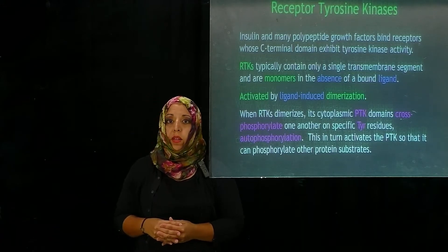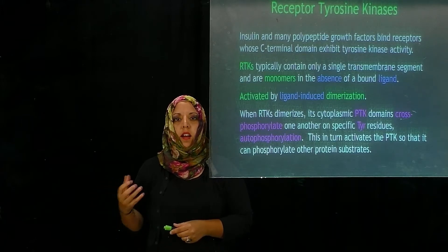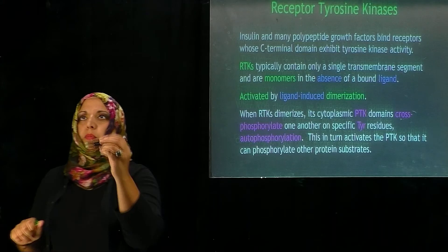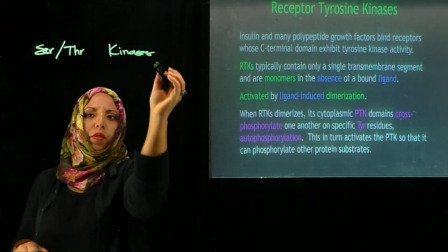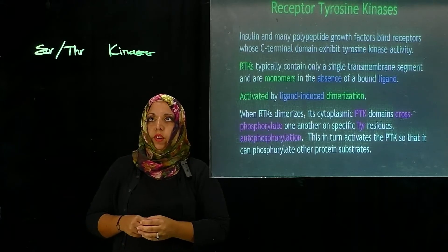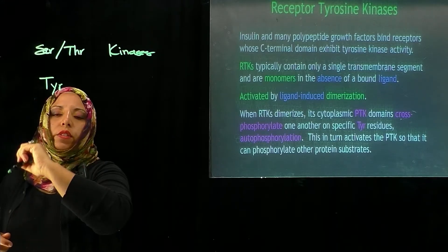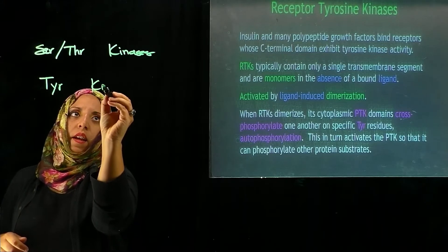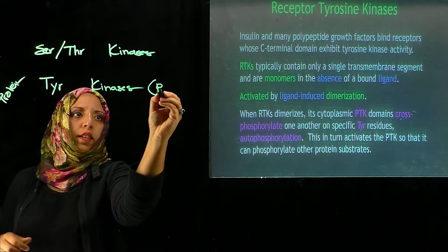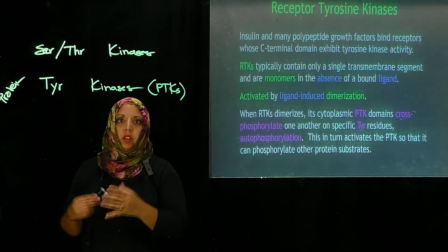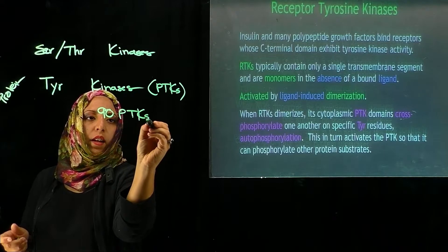In this video we're going to be discussing receptor tyrosine kinases. From our previous videos we've looked at enzymes controlled by covalent modification — one example was serine and threonine kinases, which are responsible for the phosphorylation of specific serine and threonine residues. Another example is the phosphorylation of tyrosine residues by proteins known as protein tyrosine kinases, or PTKs. In the human genome, about 90 different protein tyrosine kinases are encoded.